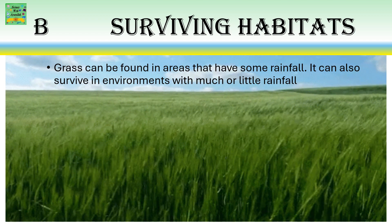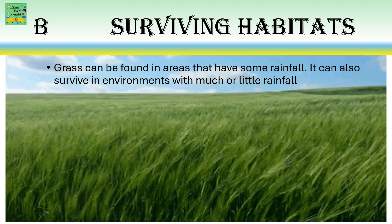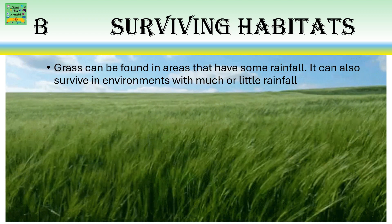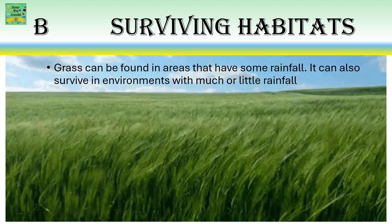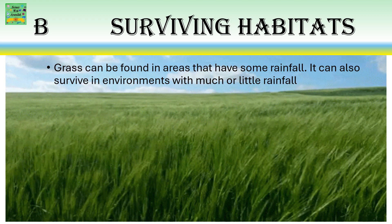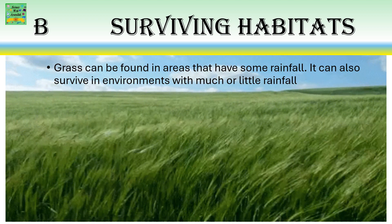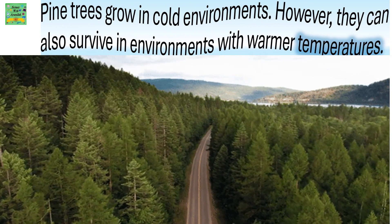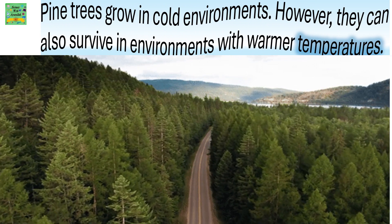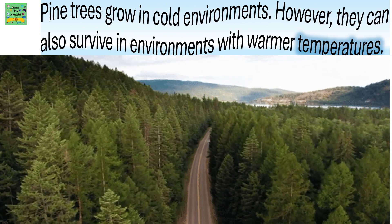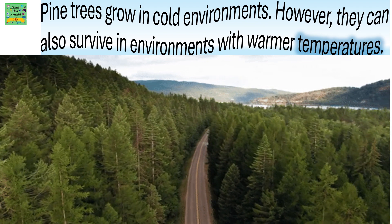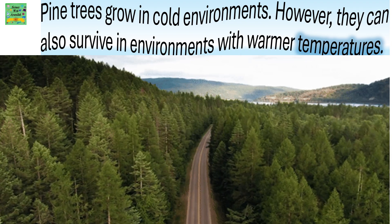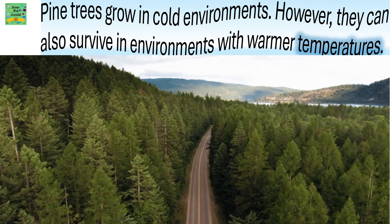Surviving habitats. Grass can be found in areas that have some rainfall, and it can also survive in environments with much or very little rainfall. Pine trees grow in cold environments; however, they can also survive in environments with warmer temperatures.